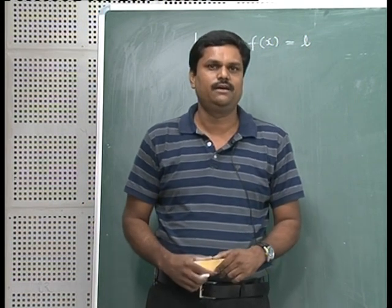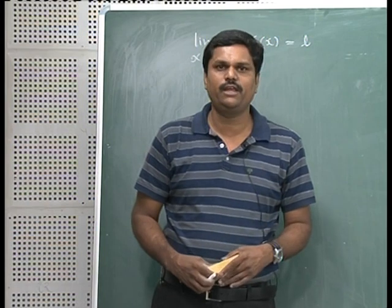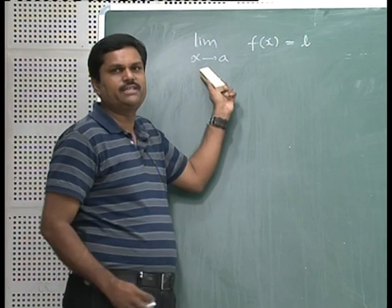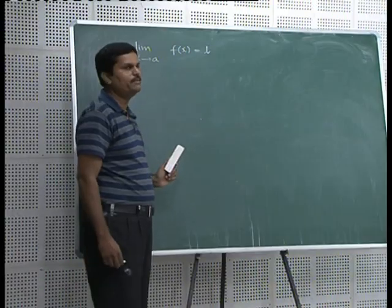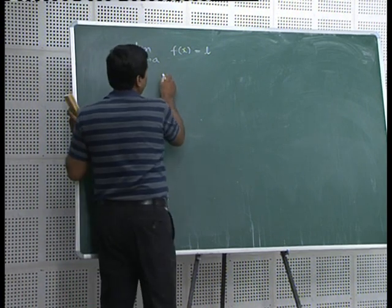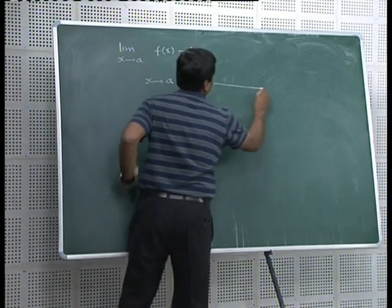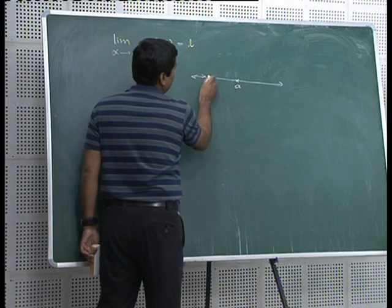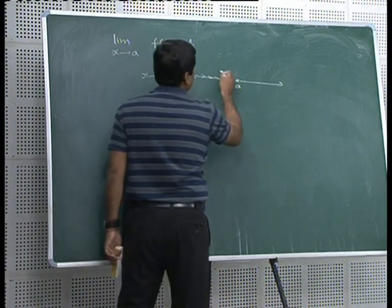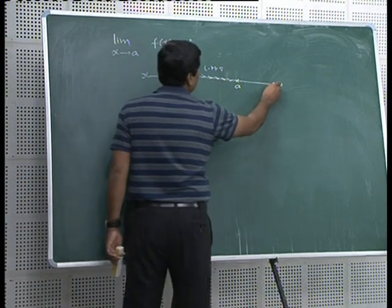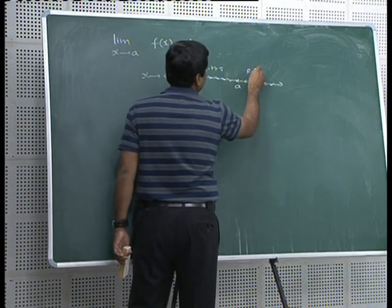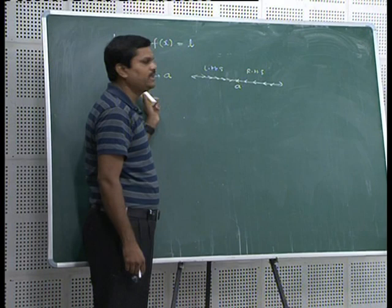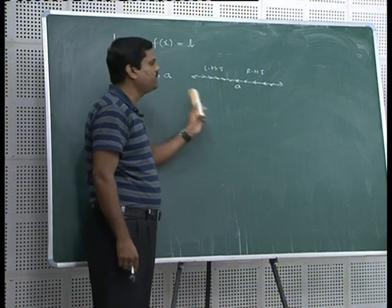First of all, let us understand the case for a function of one variable, and then I will explain for two variables. Consider limit x tends to a of f(x) equals l. In this limit of a function of one variable, x is approaching the number a in two ways: either x goes nearer and nearer to a from the left-hand side of a, or from the right-hand side of a. So there are only two possible directions.